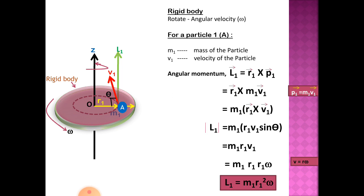Here P1 is the linear momentum of the first particle A. Then you substitute m1 v1 in the place of P1. This is equal to m1 into r1 cross v1.